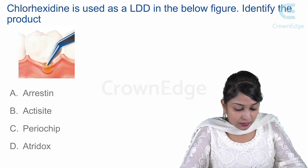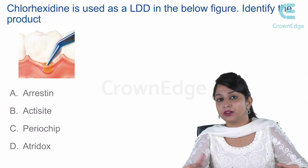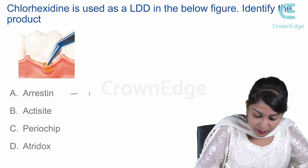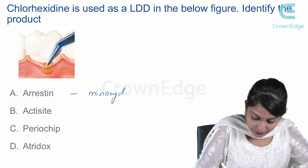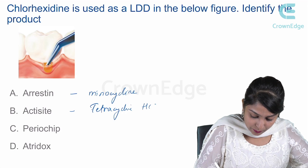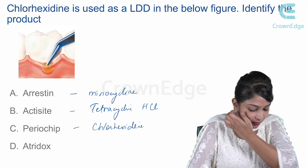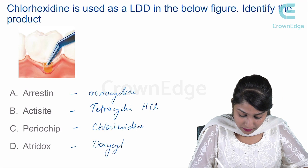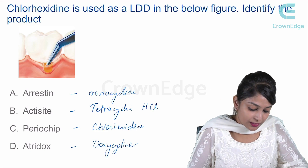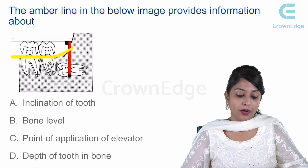Chlorhexidine is used as a local drug delivery agent. You need to know which product corresponds to which antimicrobial agent: Arrestin is minocycline fibers, Actisite is tetracycline hydrochloride, Periochip is chlorhexidine, and Atridox is doxycycline. For chlorhexidine, the product is Periochip, so option C is the right answer.